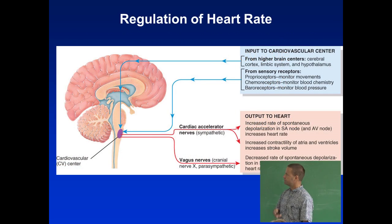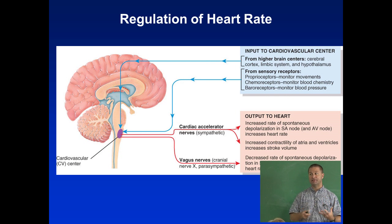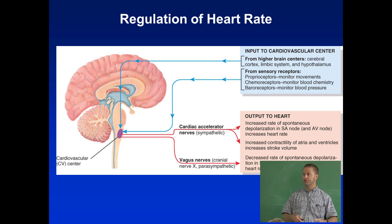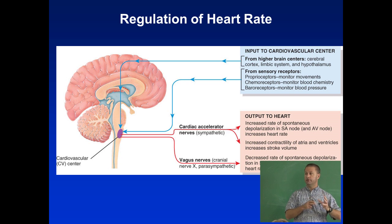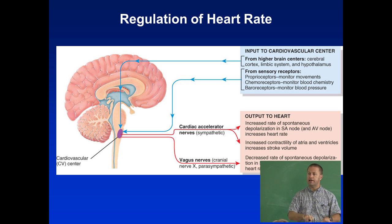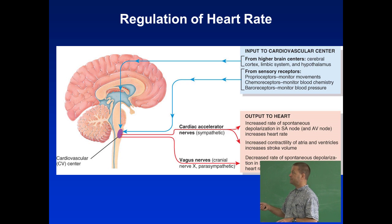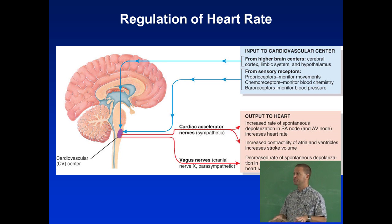So who controls the heart? The heart is auto-rhythmic — it controls its own beating. The area that sets the pace, the pacemaker, is the SA node — the sinoatrial node — which tells the heart how many times a minute to beat. The heart can beat without input from the brain for a short time, but the brain can modify it. Even conscious input can raise heart rate — like a dog seeing the mailman or the UPS guy.